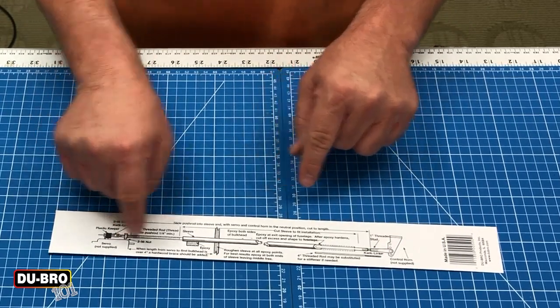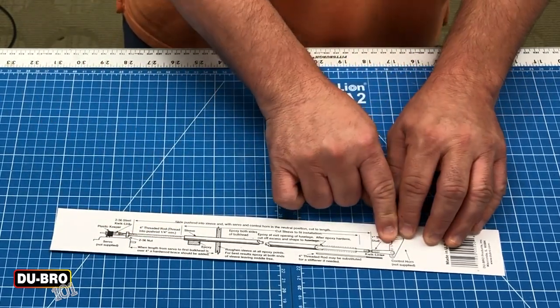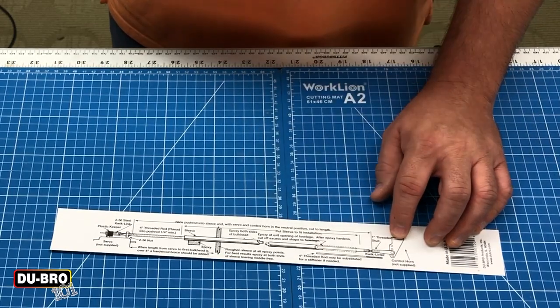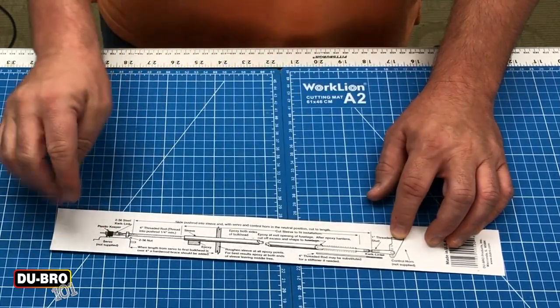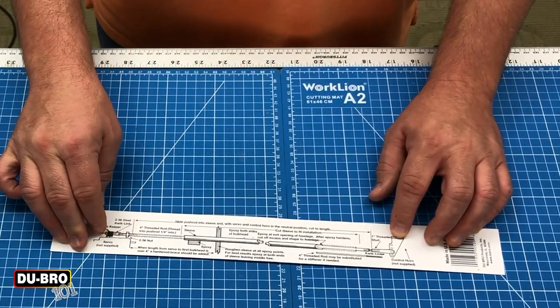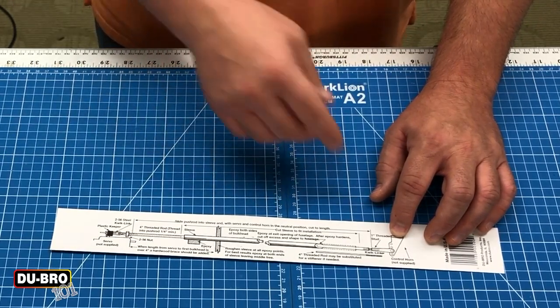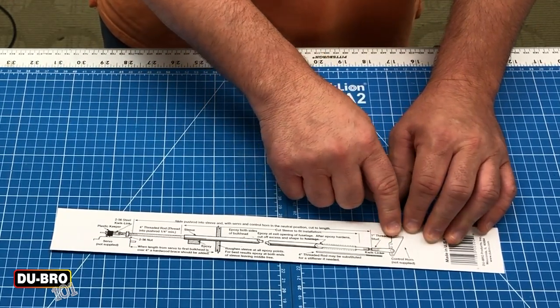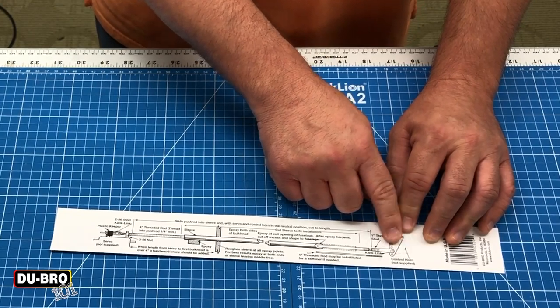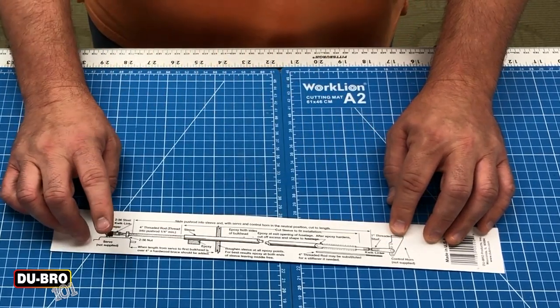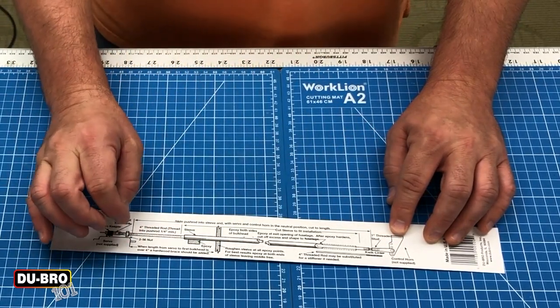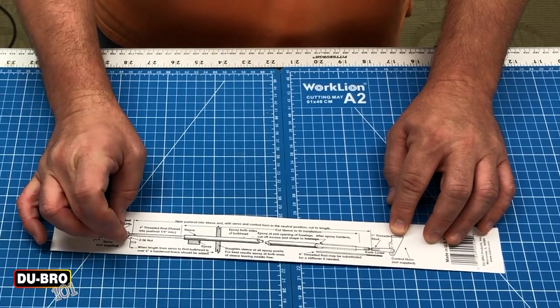Or if you put the nut on this end, how it's connected to the control horn. So either end that you use—I personally only use on the servo side because it gives better adjustability, easier adjustability at the control horn point. But that's the intended use, so you really don't need 2-56 nuts at both ends.